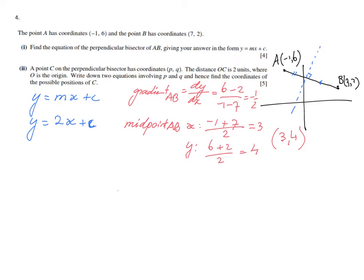So don't worry too much. Step by step, we're getting to the answer. We have a point now: (3, 4). Let's plug it in to find C. So Y is 4 when X is 3. So that's going to be 6. 4 minus 6 is -2. C is -2. So that equation of the perpendicular bisector: Y = 2X - 2. There we go. That is the answer to that first question.